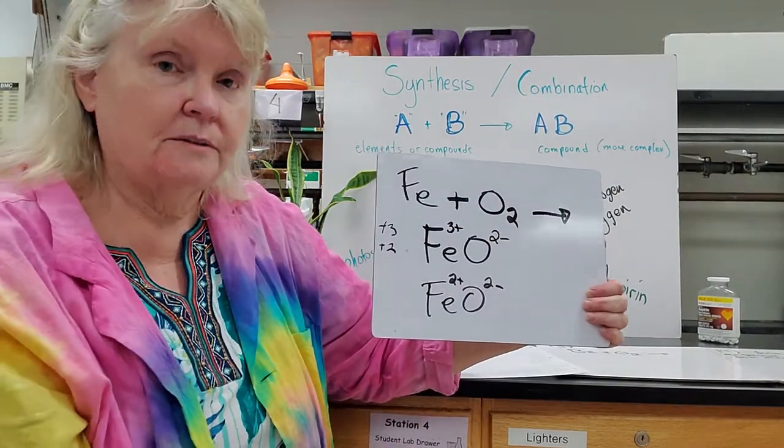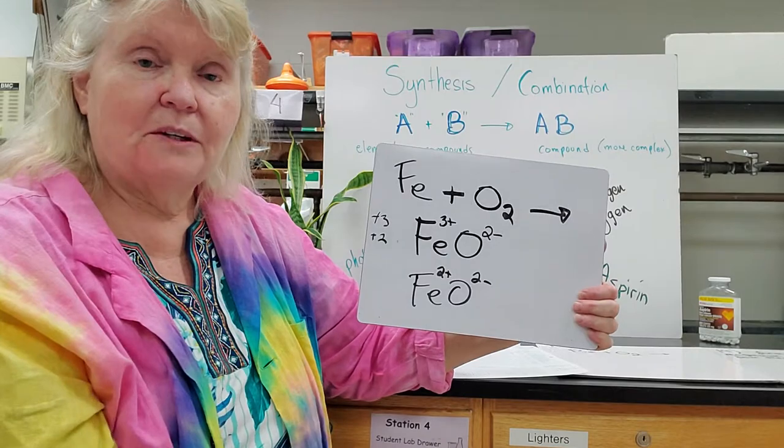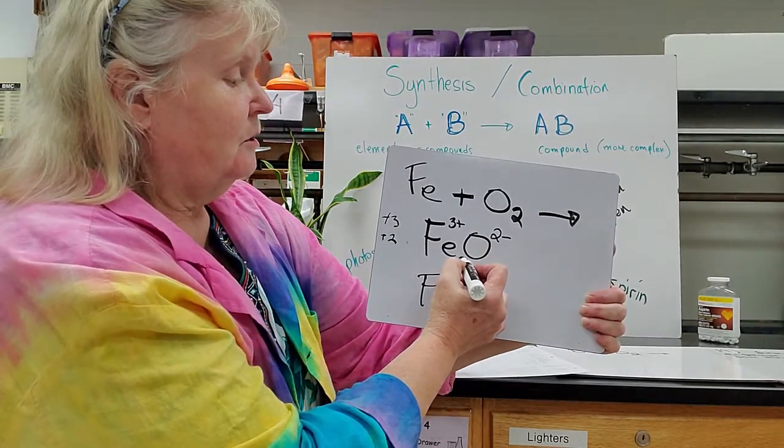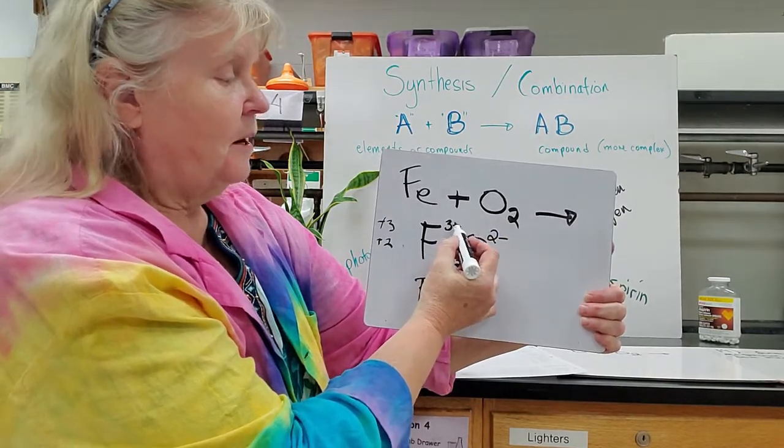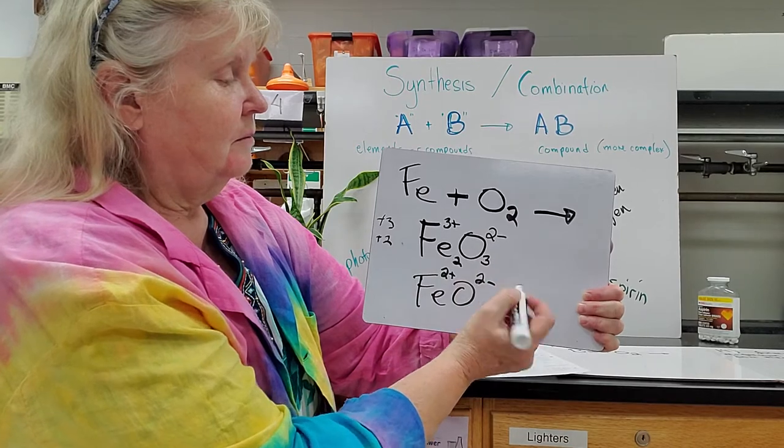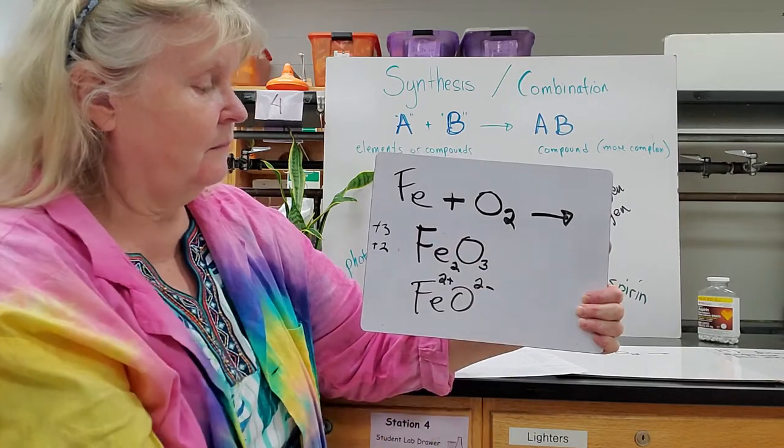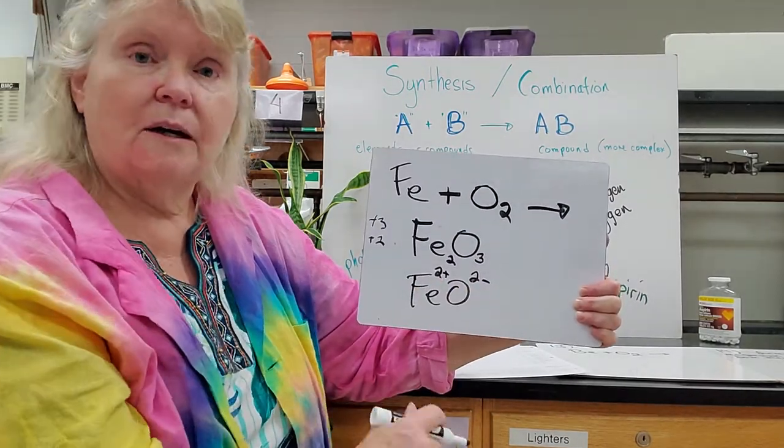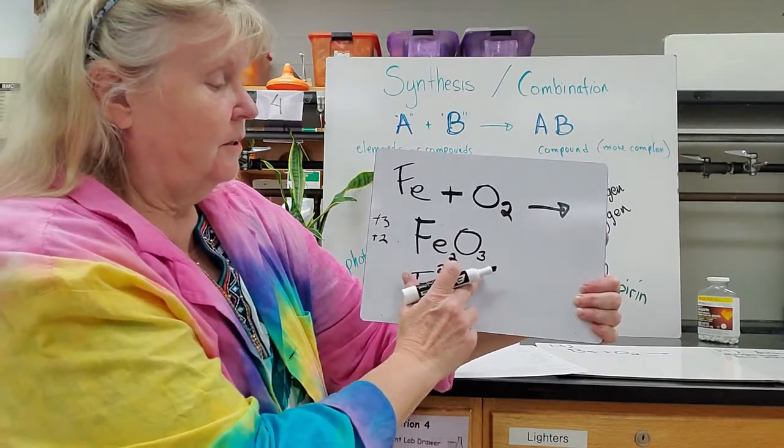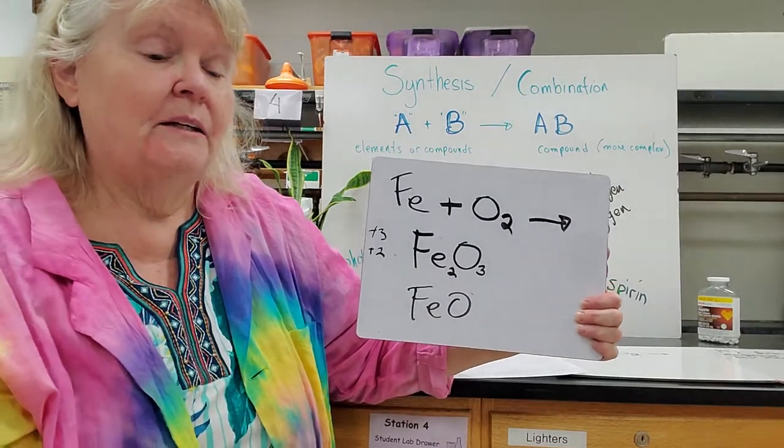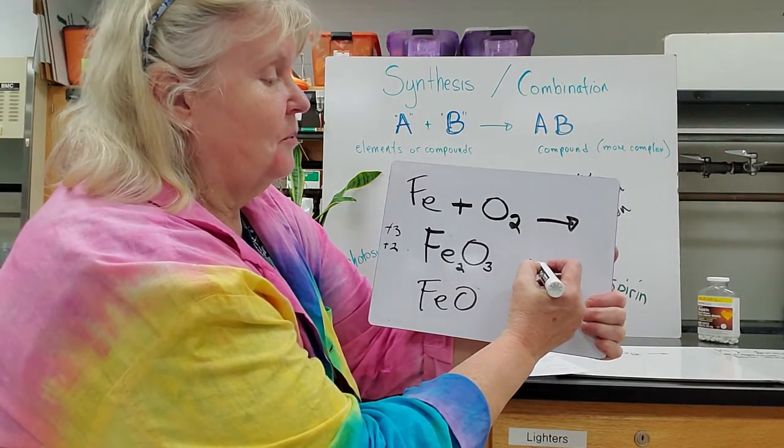Remember that if the charges don't equal, what do we have to do? Crisscross. And so this two comes down to the bottom, I ignore the negatives and positives, I'm just going to bring the three down. So now the three comes down, the two comes down, and I can get rid of these now. On the other one I have a two plus and a two minus. When they equal each other then it's just one of each. And I can get rid of these and those are my two formulas. So how do I know the difference?